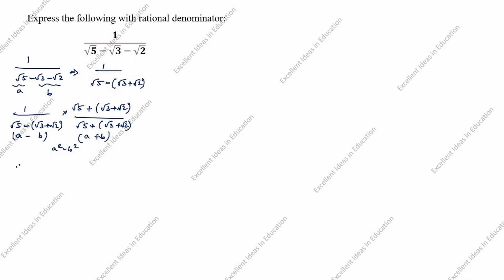Next: root 5 plus root 3 plus root 2, divided by a squared — which is root 5 whole squared — minus b squared — which is root 3 plus root 2 whole squared. That gives root 5 plus root 3 plus root 2, divided by 5 minus (root 3 plus root 2) whole squared.